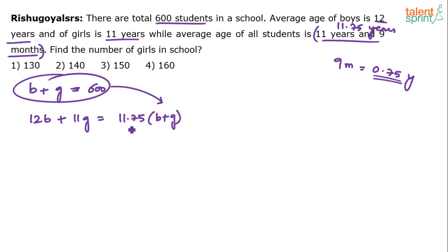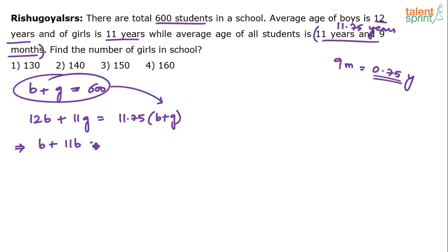The equation to solve is: 12b plus 11g equals 11.75 times (b plus g). A smart approach is to rewrite 12b as b plus 11b, so the left side becomes b plus 11b plus 11g, which equals b plus 11 times (b plus g).